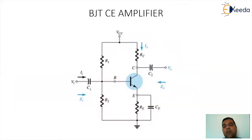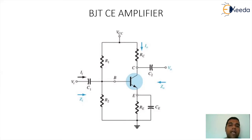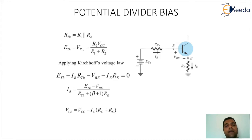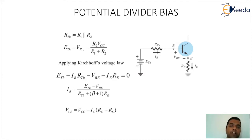Now for a BJT common emitter amplifier with a potential divider bias arrangement, the input side has two resistances R1 and R2, the output side has collector resistance RC and emitter resistance RE, and there are three capacitors C1, C2, and CE. CE is an important factor controlling the gain because it controls the impact of feedback through the RE resistance. For DC analysis, we represent the input side by its Thevenin's equivalent, then apply KVL to the input loop, getting IB as (ETH minus VBE) divided by (RTH plus (1 plus beta) times RE).